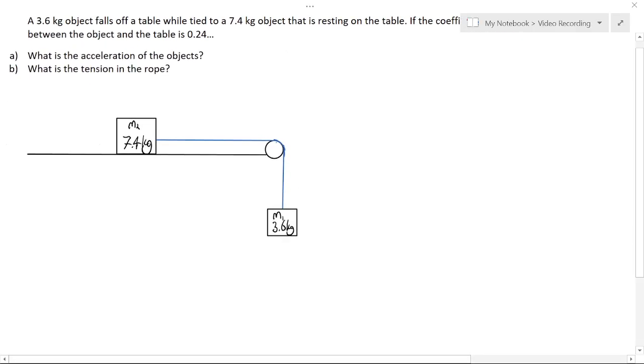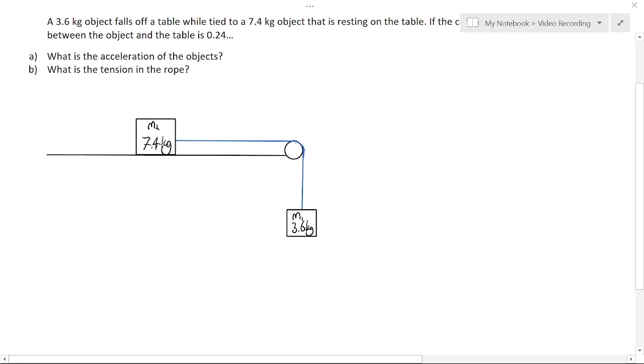So let's start by writing the forces on the problem. I'm picturing what would this look like in real life. Well, this object would have a downwards force for sure because it's trying to pull the other object off the table.